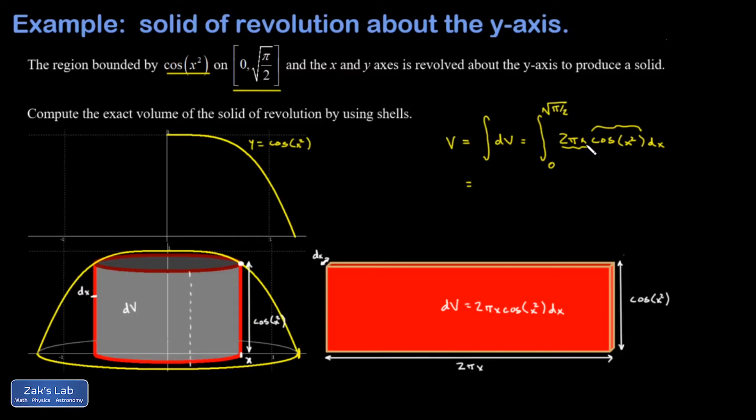If you wanted to do this formally you would let u equal x squared, but I would rather do it informally and just pull out the pi, and whenever I see a function of a function sitting right next to the derivative of that inner function, I can just guess the chain rule backwards.